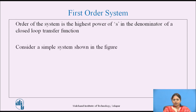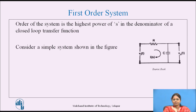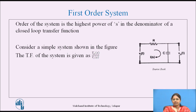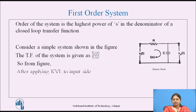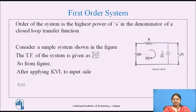Consider a simple first order system as shown in the figure, which consists of a resistor and capacitor on the input side and a capacitor on the output side. The transfer function of any system can be calculated using V_O(s) / V_I(s). From the figure, applying KVL to the input side, we get V_I(s) = R·I(s) + (1/Cs)·I(s). This equation is marked as 1.